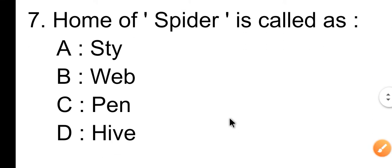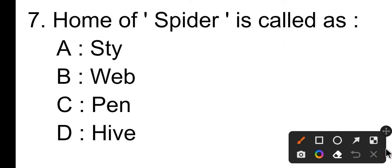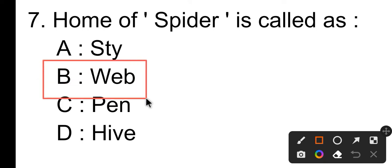Question number seven: the home of spider is called as — Option A is stye, Option B is web, Option C is pen, Option D is hip. Option C is the correct answer.